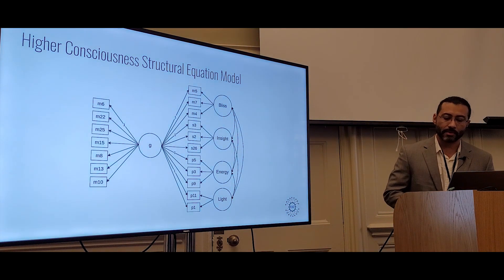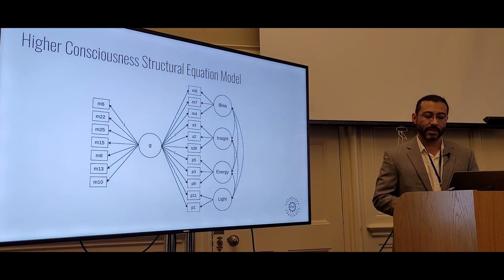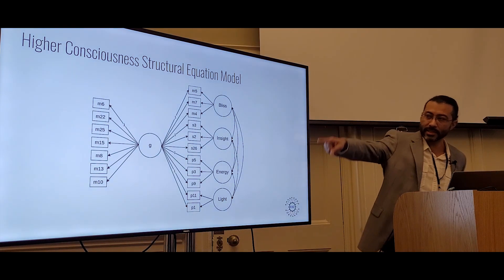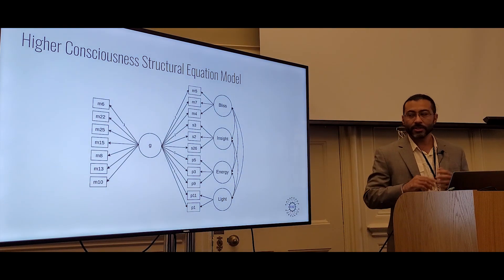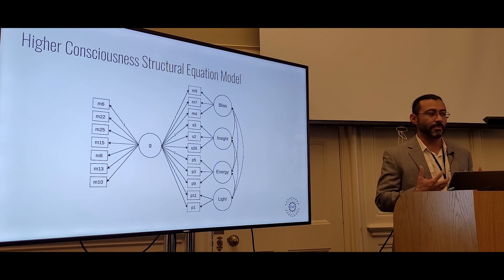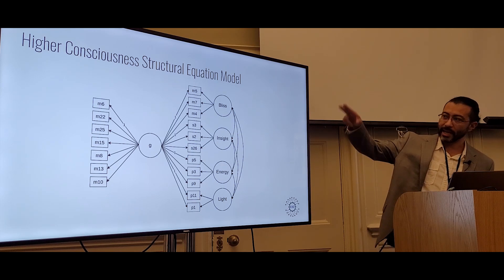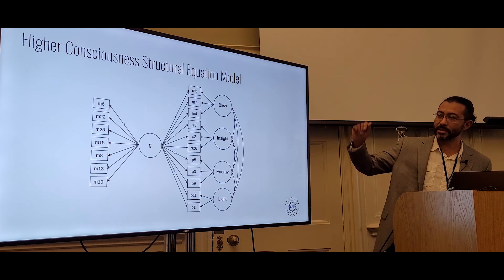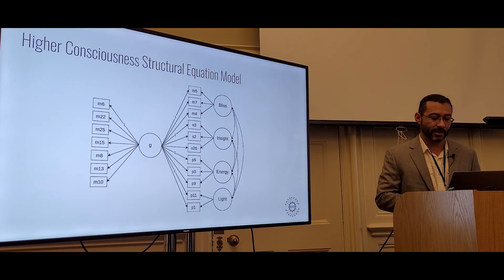Here we see a structural equation model of higher consciousness, showing the seven unity consciousness indicators on the left, demonstrating that the experience of unity consciousness underlies or is the dominant construct within higher consciousness. On the right of the experience categories I mentioned include bliss, insight, somatic energy, and luminosity.